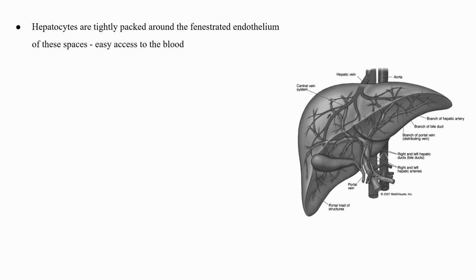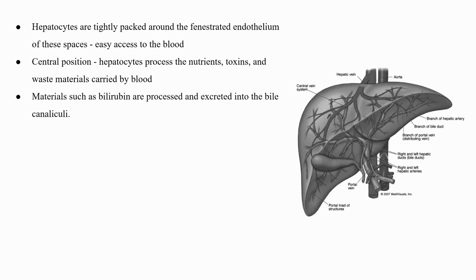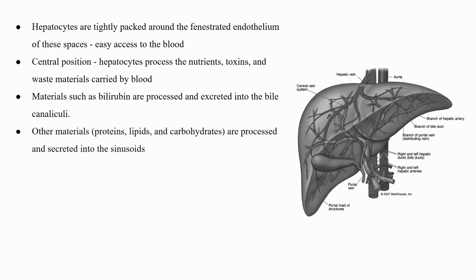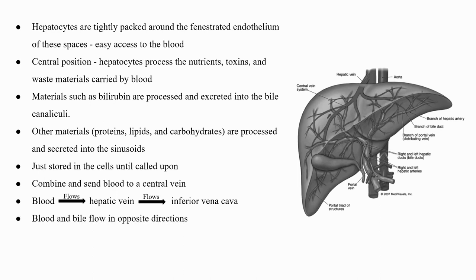Hepatocytes are tightly packed around the fenestrated endothelium of these spaces, giving them easy access to the blood. From their central position, hepatocytes process the nutrients, toxins, and waste materials carried by the blood. Materials such as bilirubin are processed and excreted into the bile canaliculi; other materials including proteins, lipids, and carbohydrates are processed and secreted into the sinusoids or stored in the cells. The hepatic sinusoids combine and send blood to a central vein; blood then flows through a hepatic vein into the inferior vena cava. This means that blood and bile flow in opposite directions.